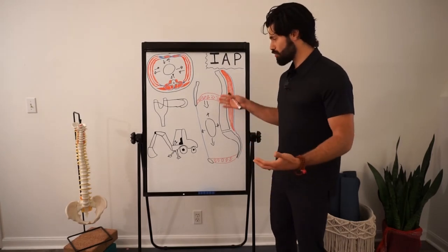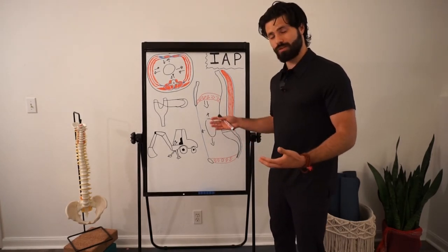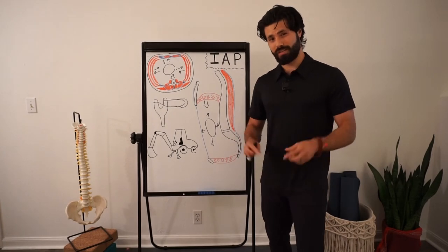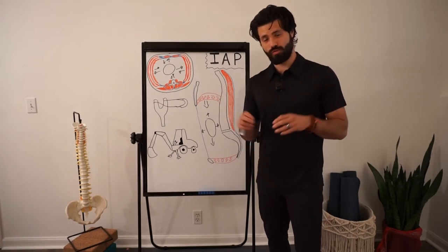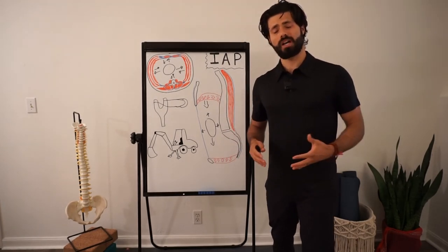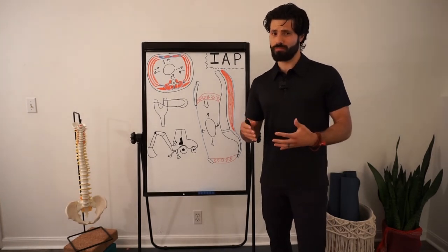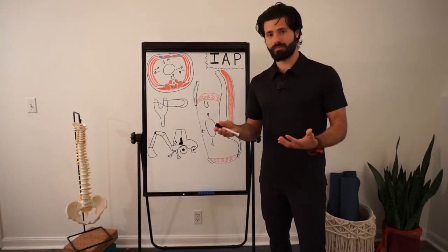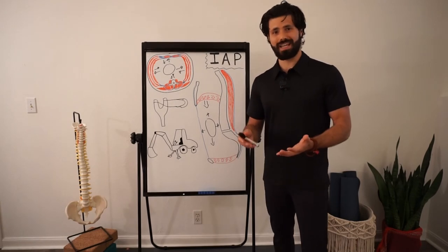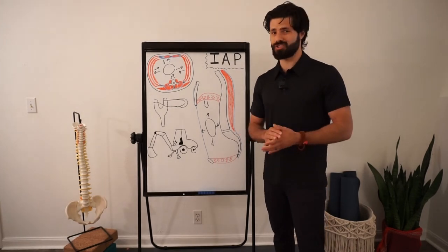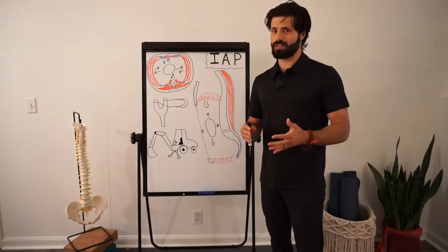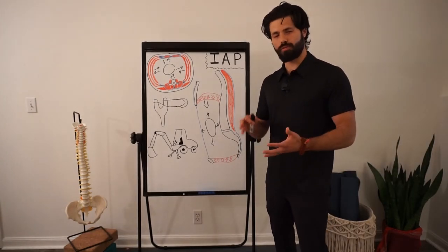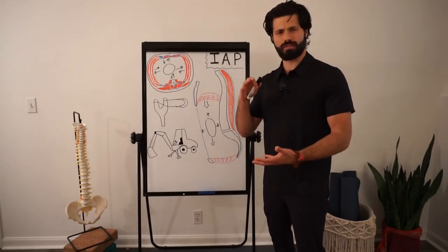Similarly, without the pressure created within the abdominal cavity, we are putting the individual panels of our body — ligaments, joints, muscles, tendons, fascia — under more stress during movement than necessary. So why is it important to create this stable torso or stable cylinder?